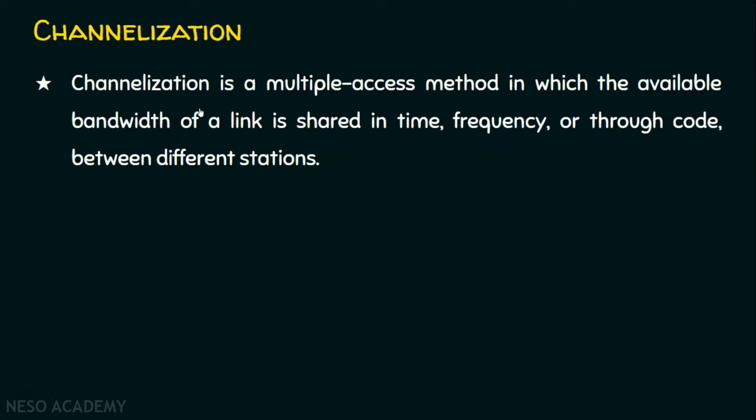Why do we need this technique? In real time, if there is a common channel and many stations to use that common channel, we can't just send data on it because it leads to collision. In random access protocol, any station randomly sends data at any time, which leads to collision, and this was handled in random access protocols. In the controlled access protocol method, we use reservation schemes, polling techniques, or token passing to handle collision. The last method is channelization, where the entire bandwidth of the channel is shared in terms of time, frequency, or code.